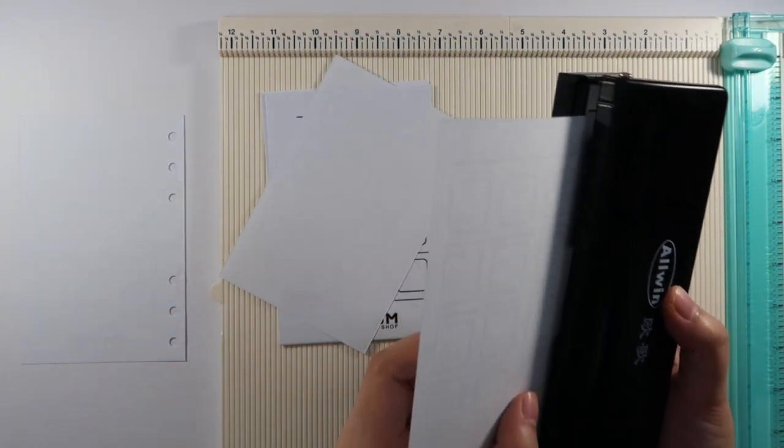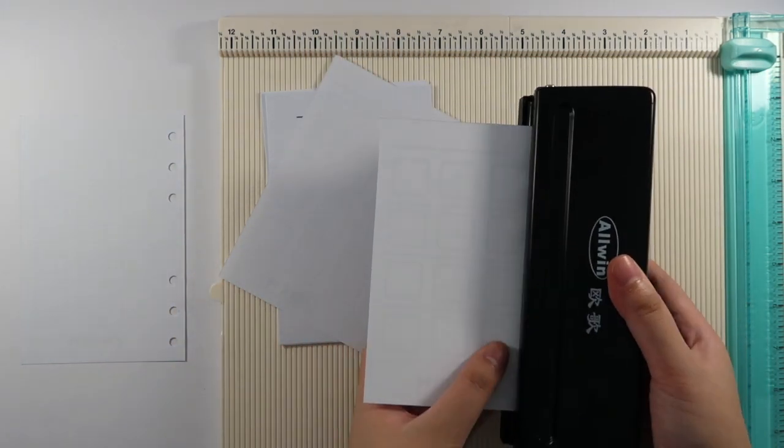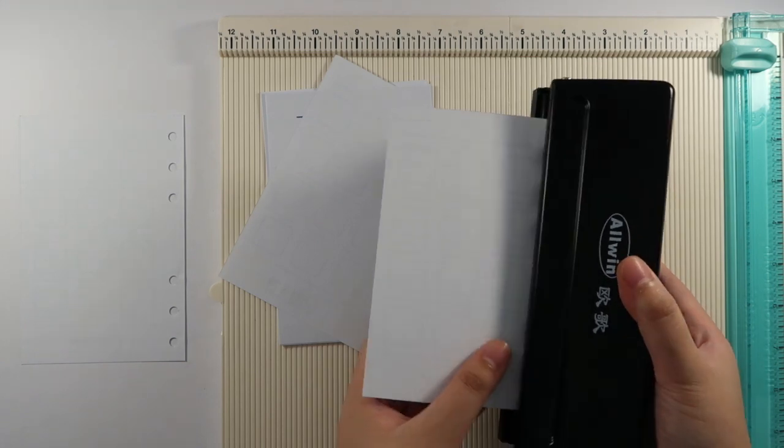Make sure that when you insert the paper into the puncher, you align it with the A6 guide mark so that the paper will be centered.